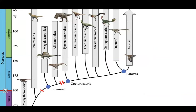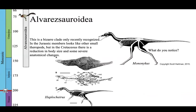If we go up through therizinosaurs, we can see there's another group that looks a little odd — these are the alvarezsauroids. This is a really funny clade. You can see animals like Mononykus there on the right. Haplocheirus on the bottom is one of the earliest alvarezsauroids, from the Jurassic, and it looks a lot like other little theropods with its claws, teeth, and body plan. But once we get into the Cretaceous, especially the late Cretaceous, animals like Mononykus are what these dinosaurs look like.